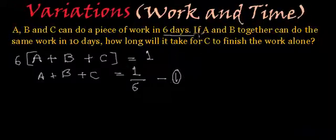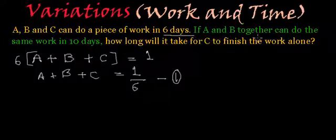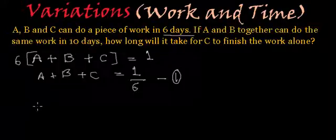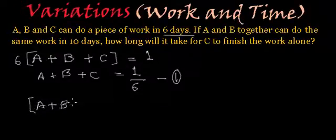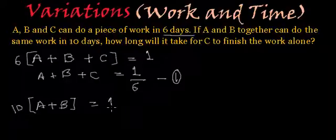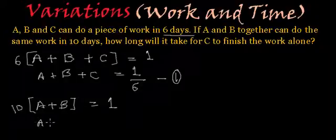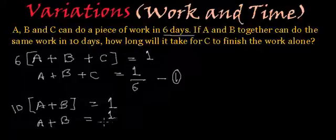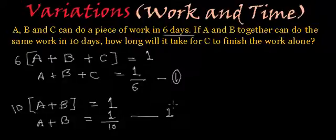Now let's read the second part of the statement. In the second part they are saying if A and B together can do the same work in ten days, that means A and B when they work together are taking ten days to finish the job. That means ten multiplied by A plus B will be equal to one, or A plus B will be equal to one by ten. So from here we have got our second equation.